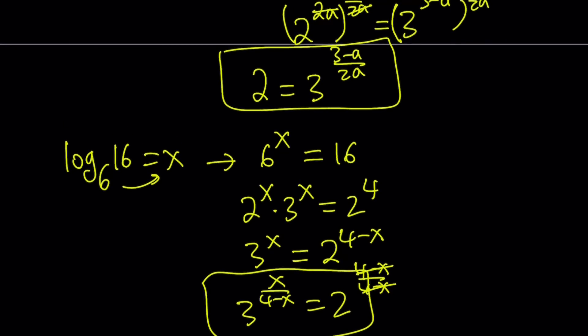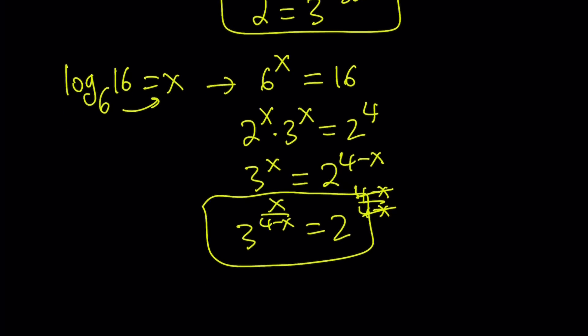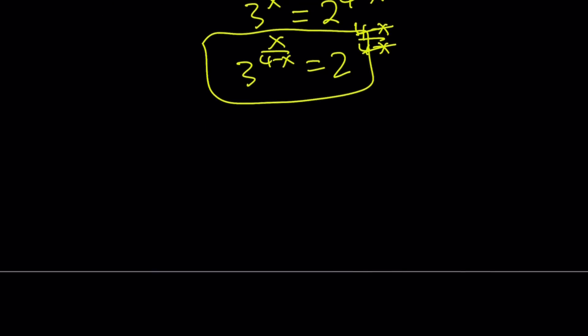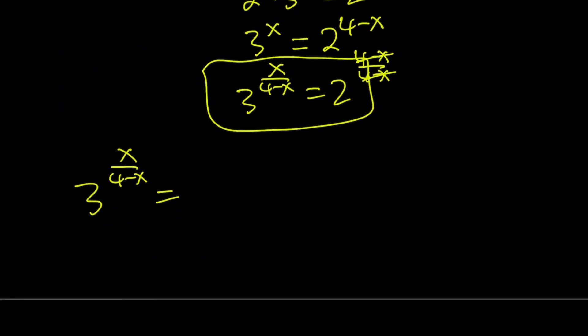If two things are equal to the same thing, then they're equal. Hopefully you know that principle, transitive property or something like that. So now we're going to set those equal to each other, and since our goal is to find X, even though it doesn't matter, I'd like to keep the X on the left-hand side. So I'm going to write it this way: 3 to the power X over 4 minus X equals 2, which is also equal to 3 to the power 3 minus A divided by 2A. Awesome. Now we've got the same bases, which is good, because now we can equate the exponents.